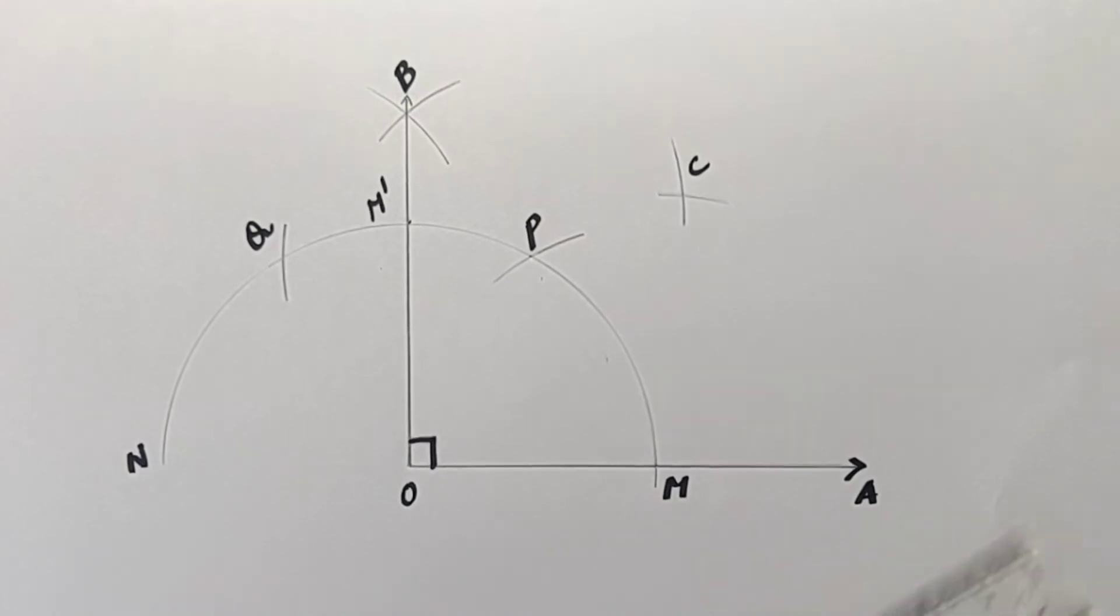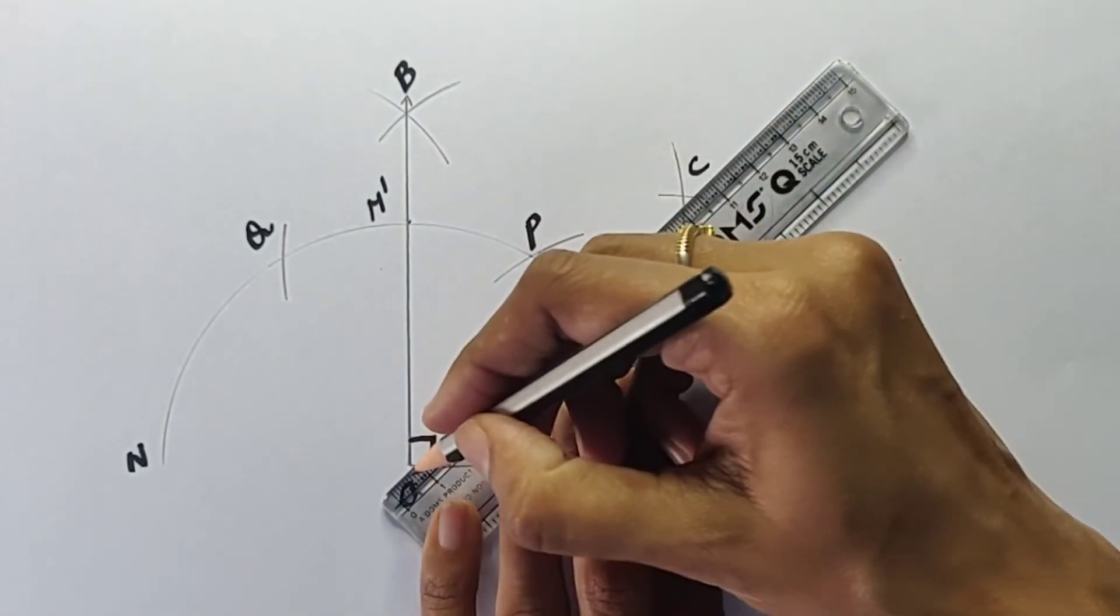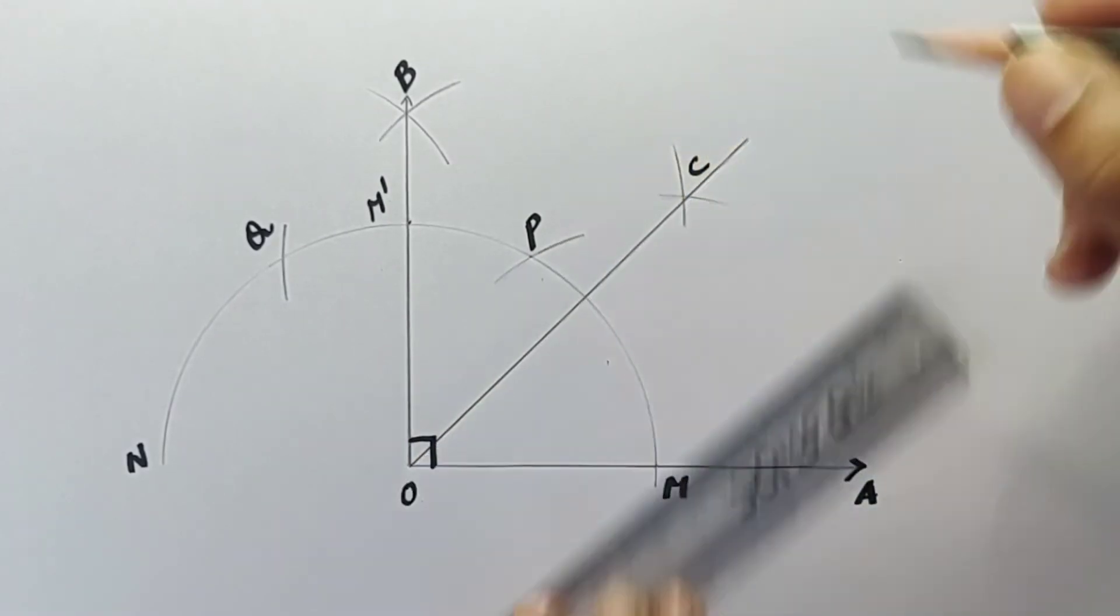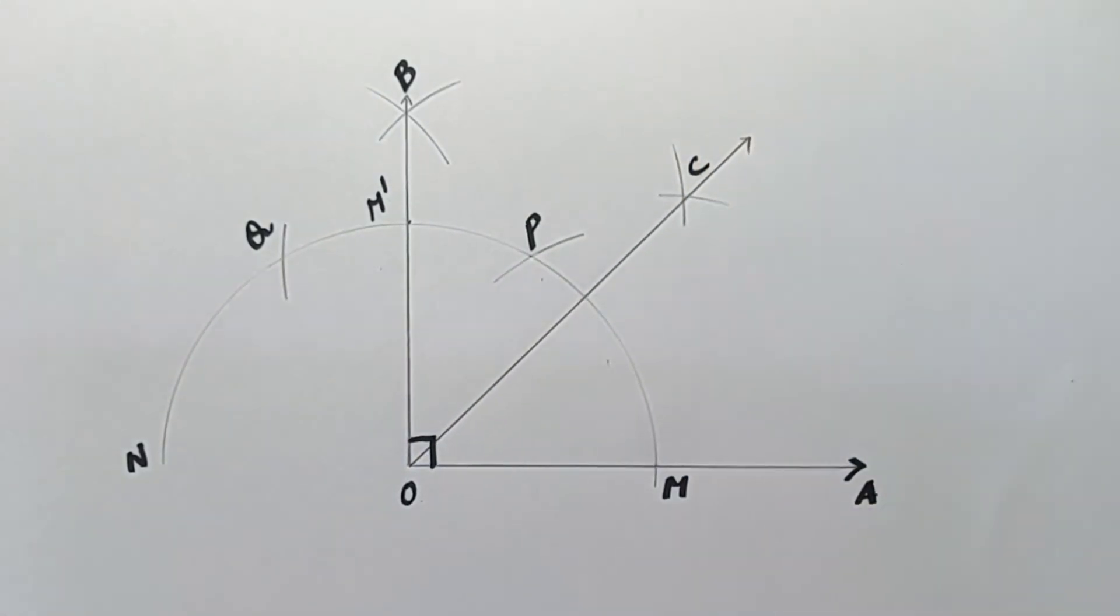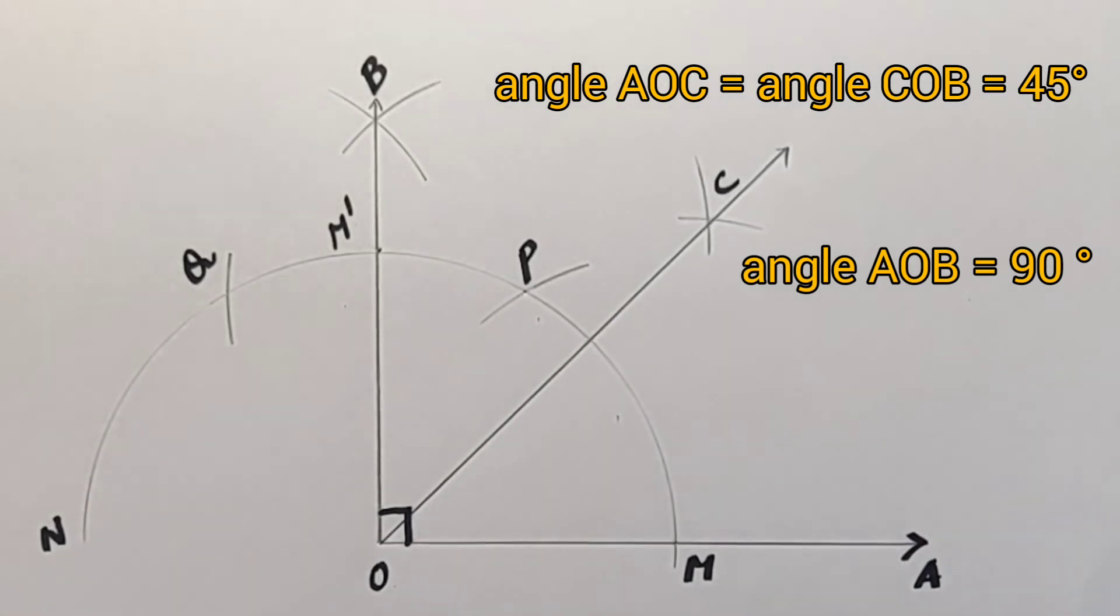Draw a ray passing through this point of intersection C. So, this is ray OC. Now, angle AOC is equal to angle COB is equal to 45 degrees and AOB is equal to 90 degrees is the required angle.